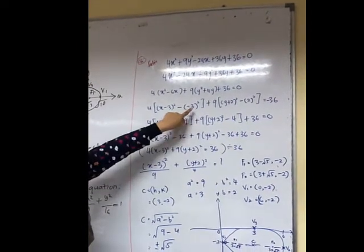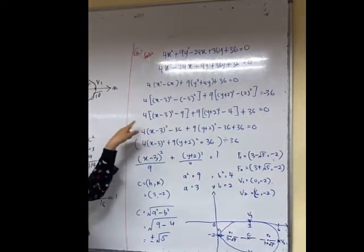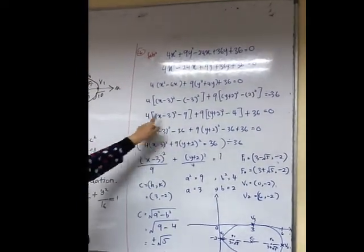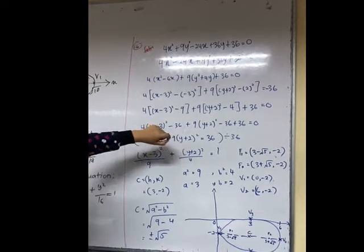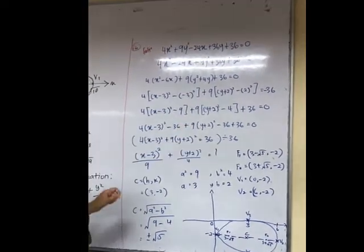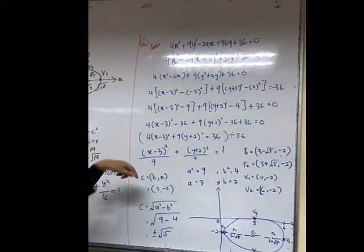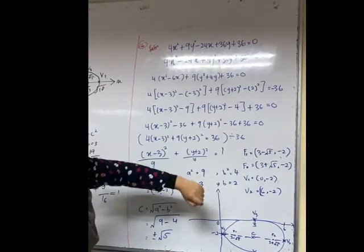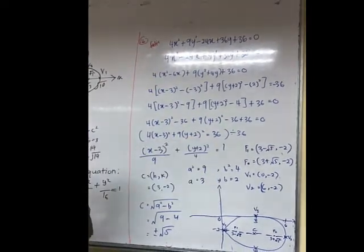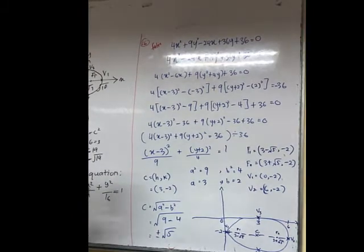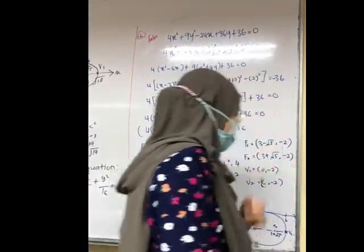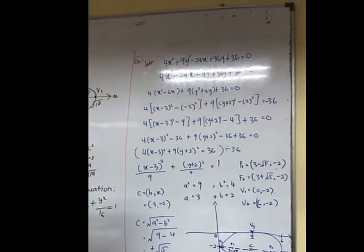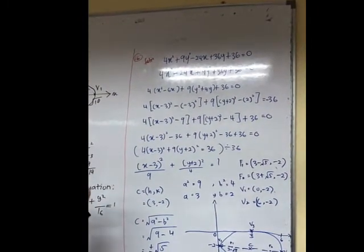And then we solve the equation, expand it back. 4 times (x - 3)², 4 times 9 we got -36. 9 times -4 we got -36. And then we solve, -36 - 36 + 36, we bring to this side, got 36. And then to make it in general equation, general equation of ellipse is (x - h)²/a² + (y - k)²/b² = 1.